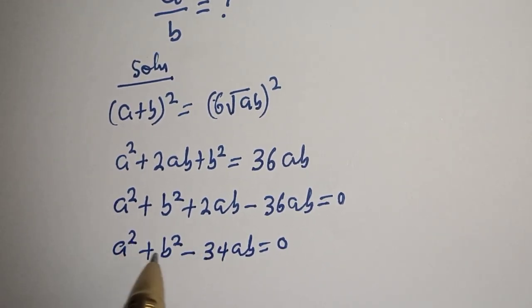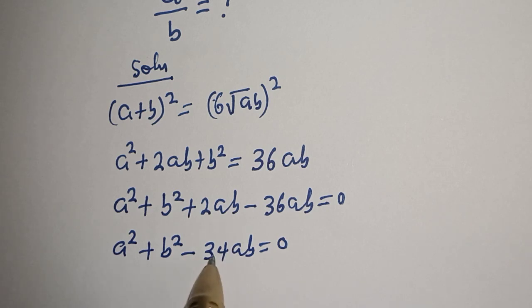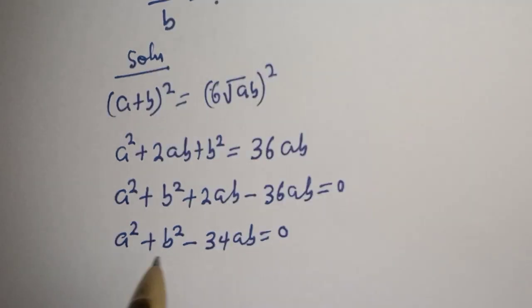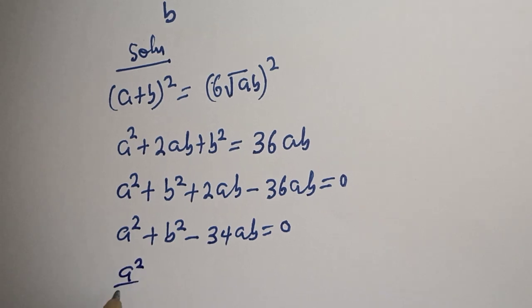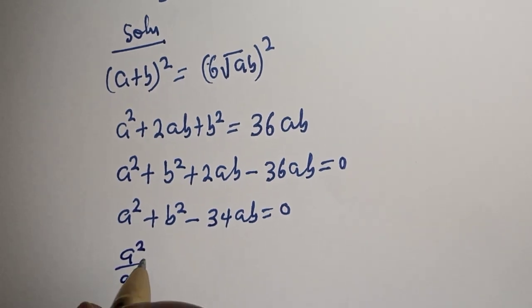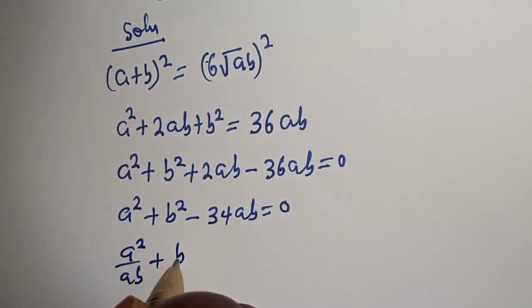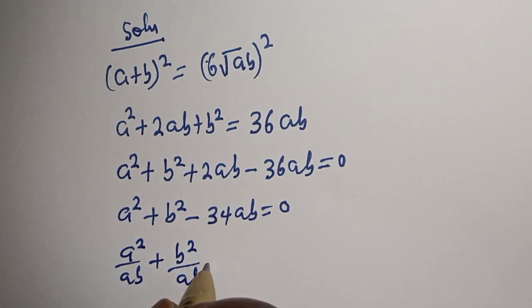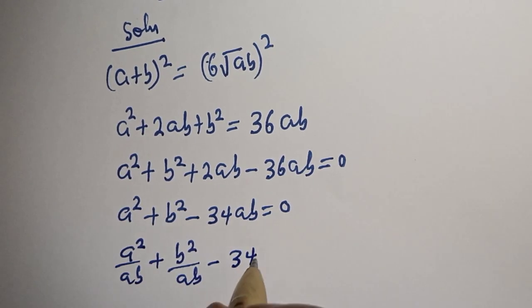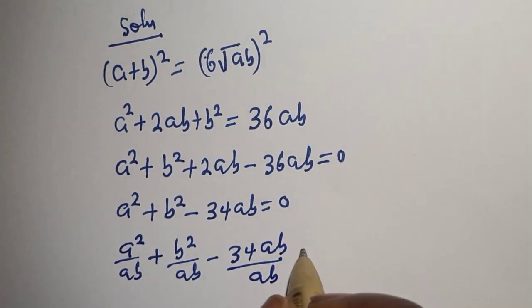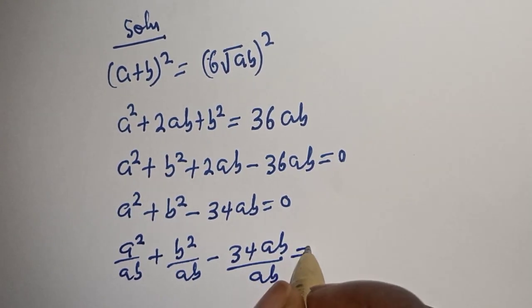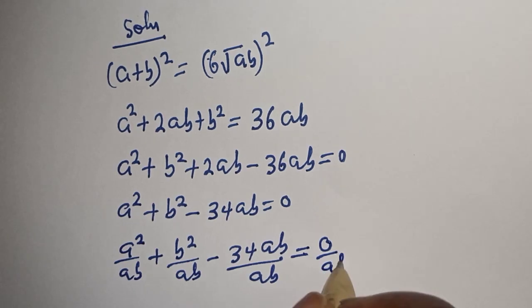Now we have A squared here, B squared here, and AB here. Let's divide both sides of this equation by AB. So: A squared divided by AB, plus B squared divided by AB, minus 34AB divided by AB, is equal to 0 divided by AB.